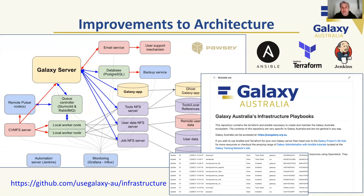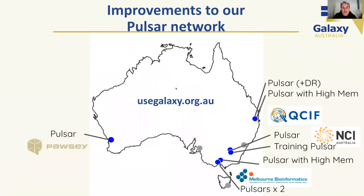Any bioinformatics tool our users may need is installed via a fully automatic system using a GitHub repository and a Jenkins server. Over the last 12 months, we've also been given access to quite a lot of compute resource, all of it remote to our core service. These additions include a large cloud node at NCI for training and other uses, as well as large high-memory nodes in Brisbane and Melbourne with 256 cores and 4 terabytes of RAM each, plus a number of other distributed compute resources around the country.